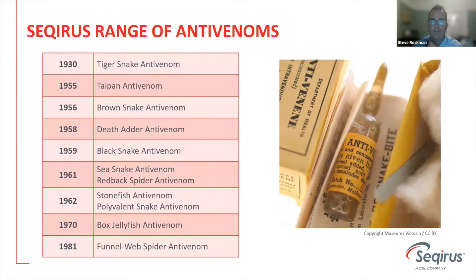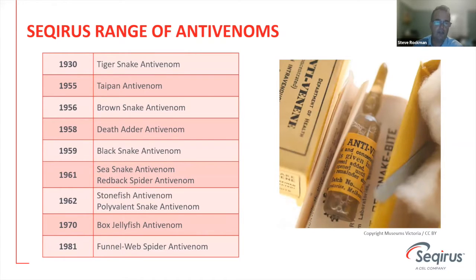We also have two venomous spiders, stonefish, jellyfish, and for all of these we have created anti-venoms. These have been actively used in hospitals around Australia for many decades, preventing envenomation of individuals or rescuing envenomated people.